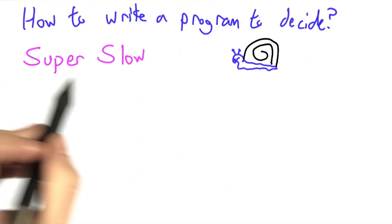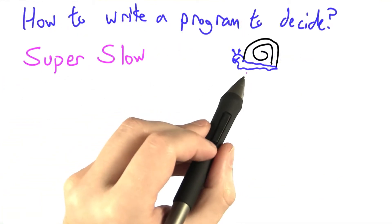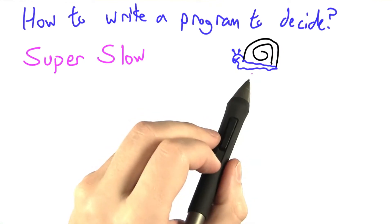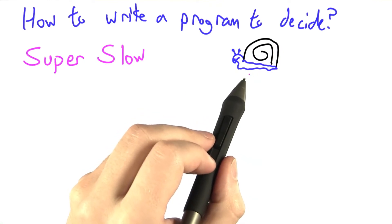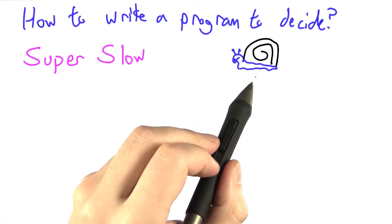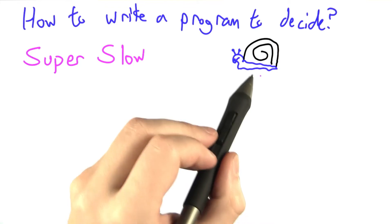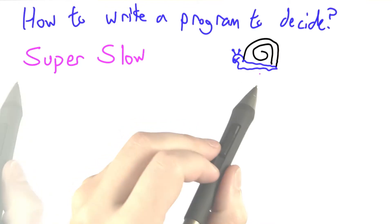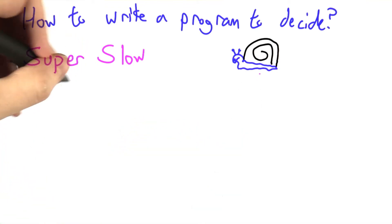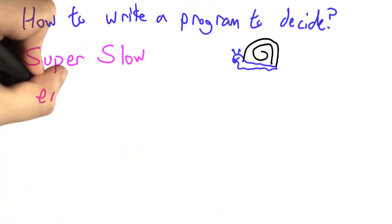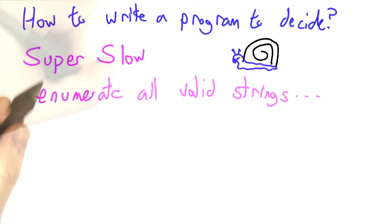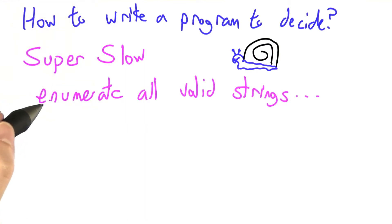One approach — and this approach is super slow, we're talking snail speed here — one approach would be to enumerate all strings in the language of the grammar, and then just check to see if yours is in there.